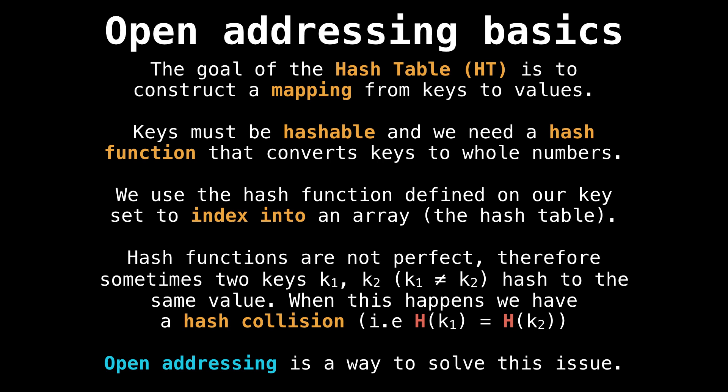The goal of the hash table is to construct a mapping from a set of keys to a set of values. The keys need to be hashable. What we do is we define a hash function on the keys to convert them into numbers. Then we use the number obtained through the hash function as a way to index into the array or the hash table.